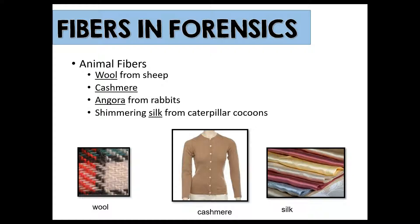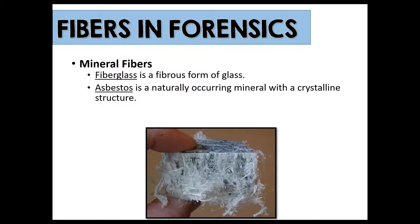Animal fibers include wool, which is derived from sheep; cashmere, which — interestingly — comes from goats; angora, which comes from rabbits; and silk, where real silk comes from caterpillar cocoons, though man-made silk exists as well.